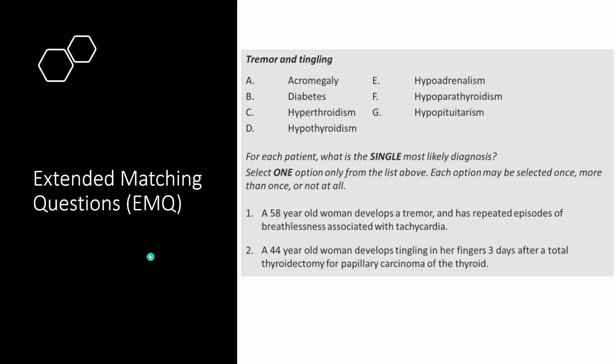Let's take a look at the first type of question, the extended matching questions. These questions give you a pool of options to choose from for the next few questions. One example I can remember from the test is the topic of electrolyte imbalances where they'll give you options of things like hyperkalemia, hyponatremia, hypercalcemia and so on. The questions will be simple such as a patient has an AKI and ECG shows tall tented T waves — the answer is hyperkalemia. Or a patient being treated for DKA with IV fluids develops new confusion and headache — the answer is hyponatremia.